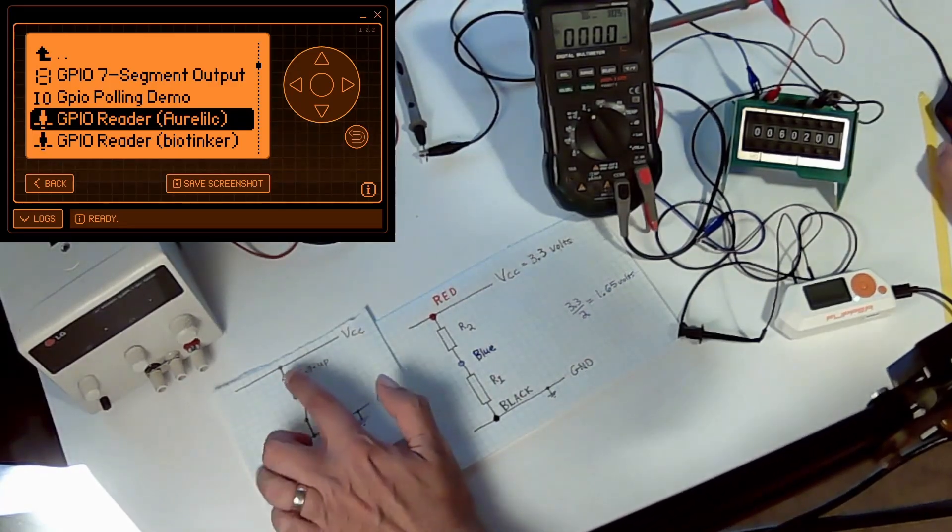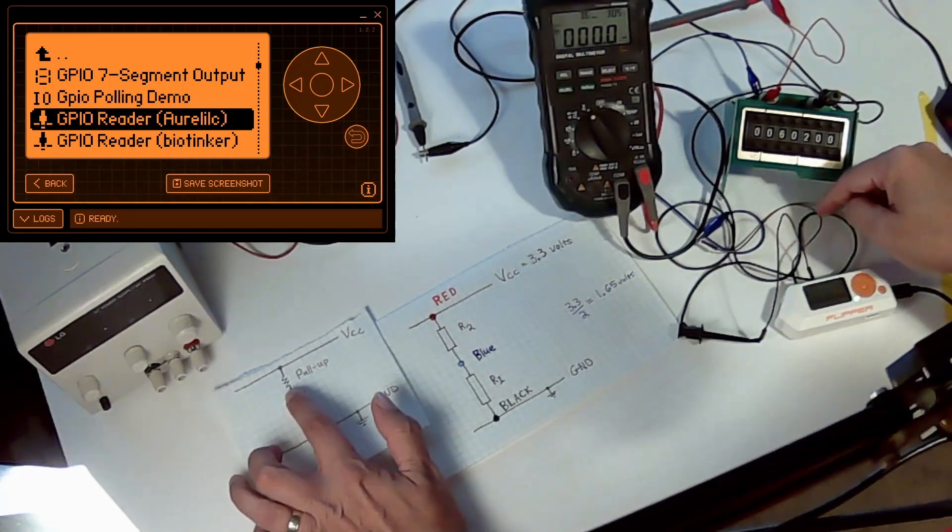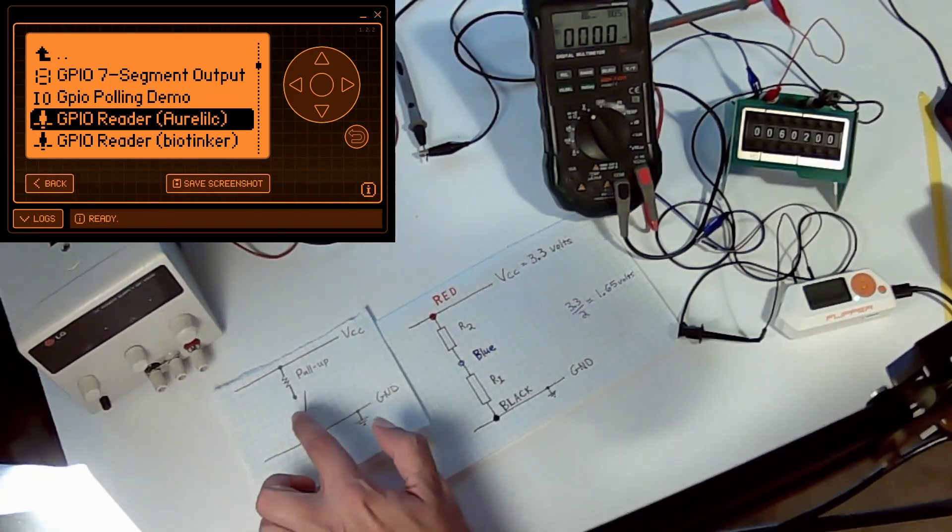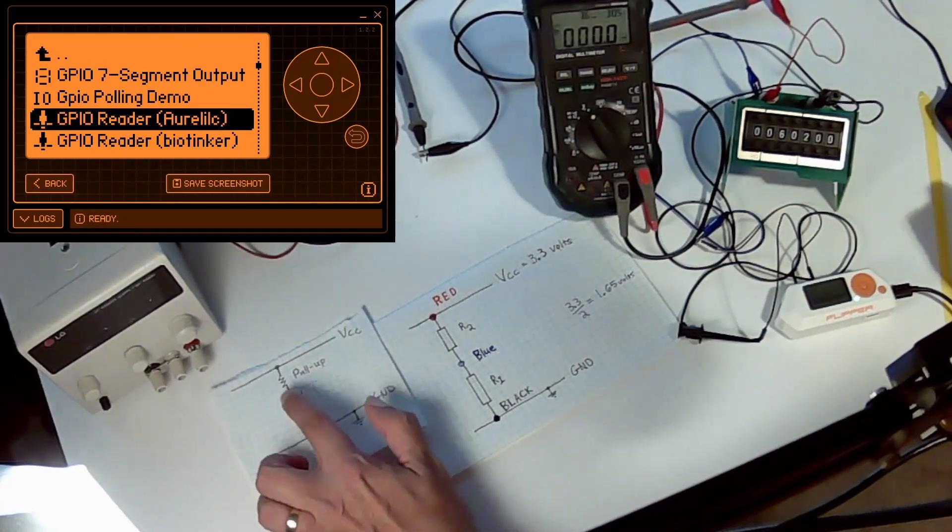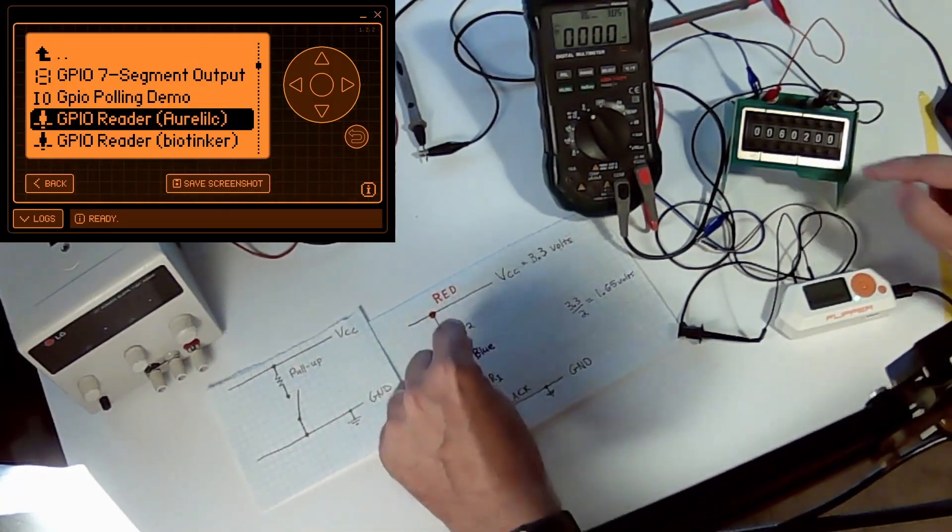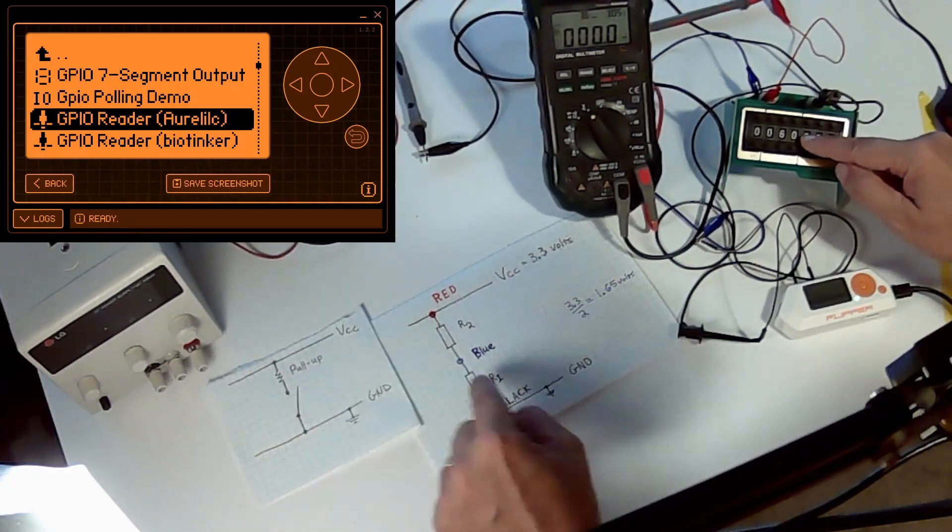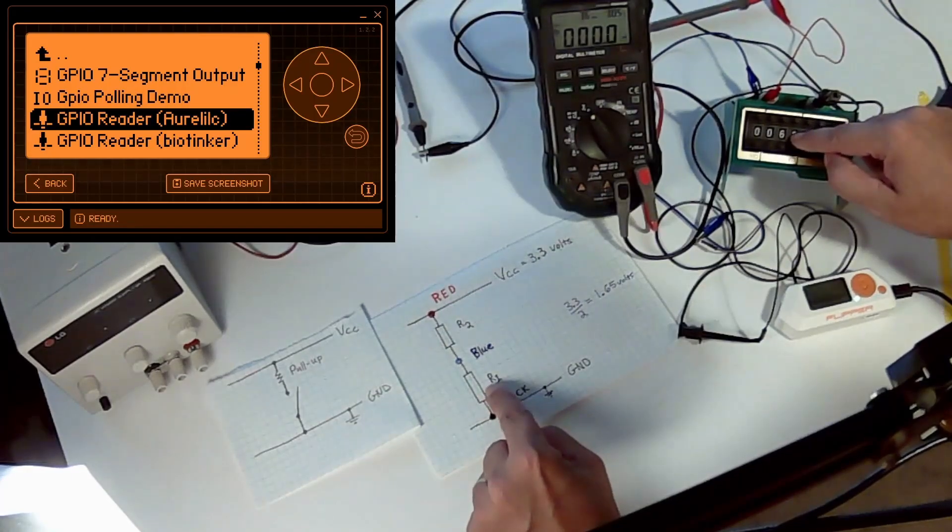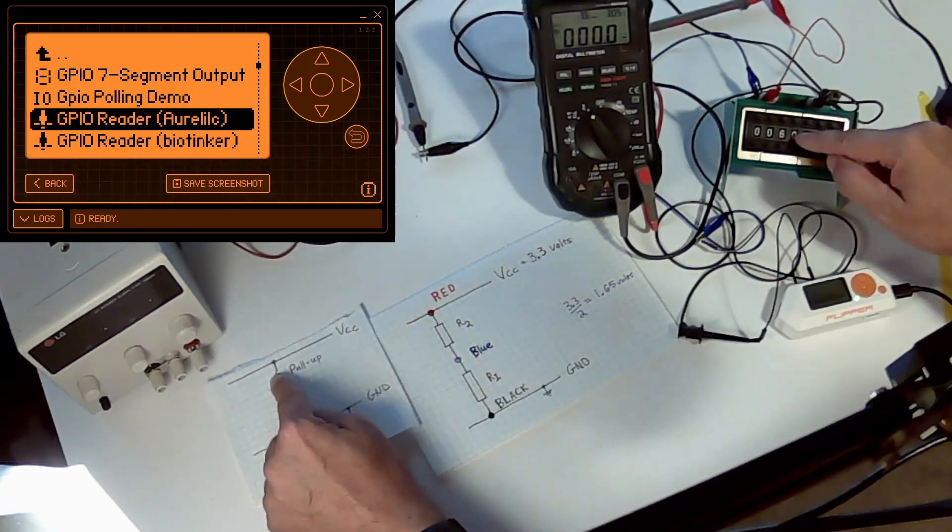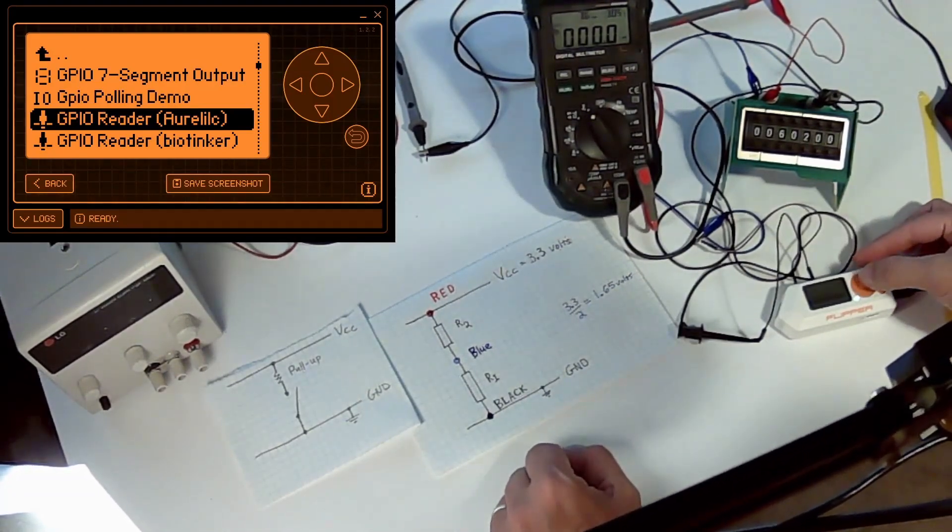So now we're going to look at the Flipper and we're going to use the pull-up on pin A7 and then go through the purple wire. Instead of using a wire directly, we're going to use this resistor. So we actually have the pull-up here and then this resistor R1 that we're going to connect to it. When this value is the same as our pull-up resistor, then this voltage should be 1.65. So let's go into it.